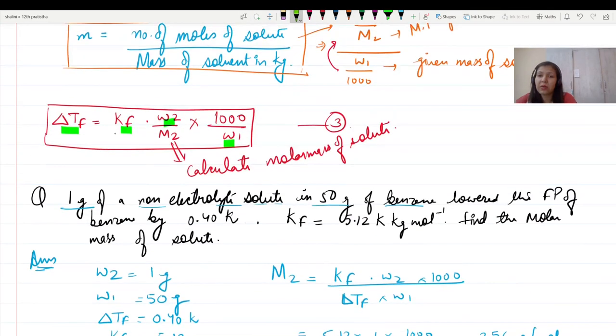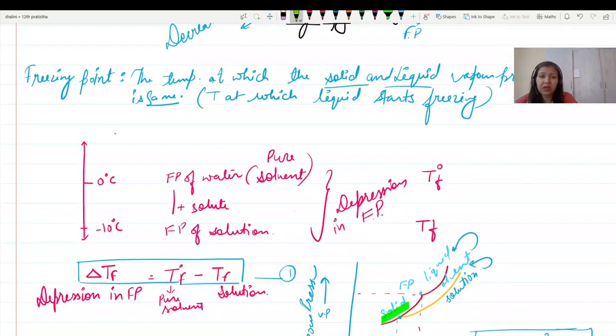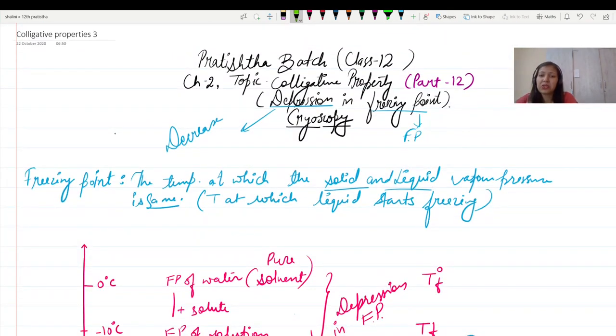The first class was Depression and Freezing Point. We discussed the definition, formula, graph, and numerical. That was Part 12.